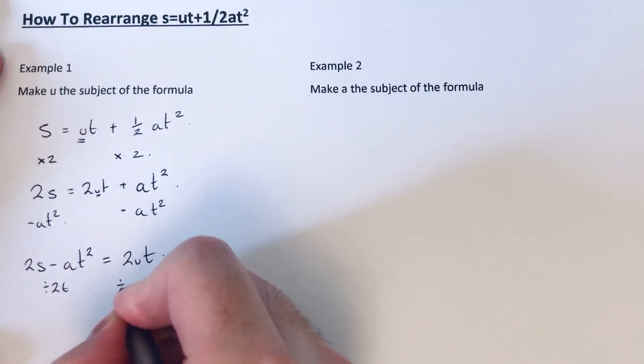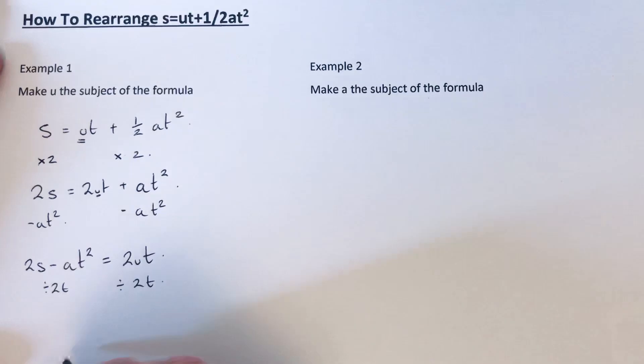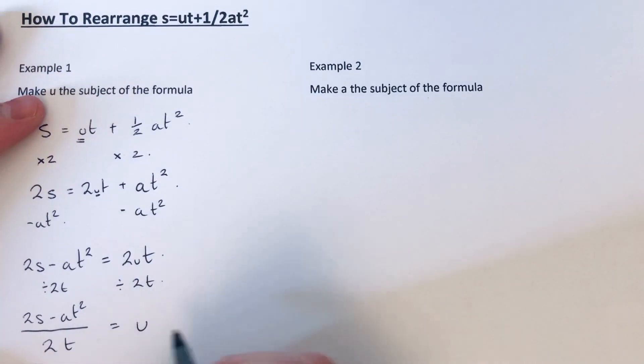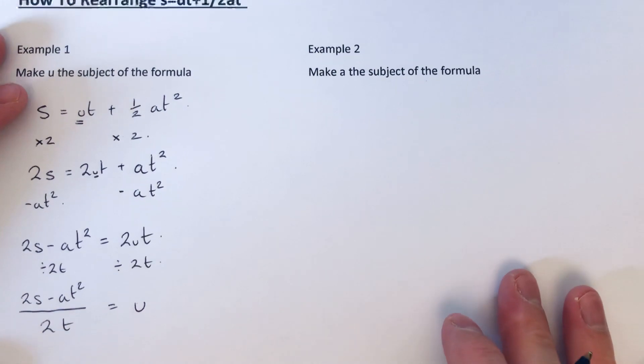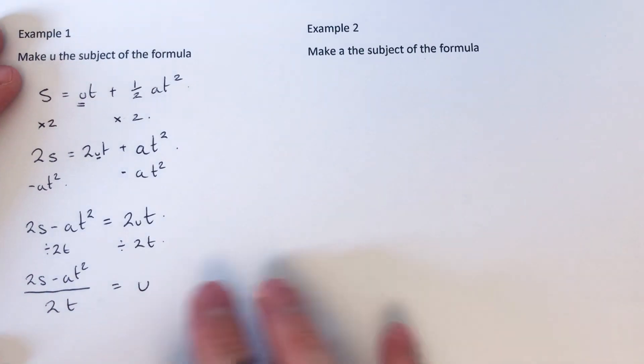So u is being multiplied by 2t, so I'm going to divide both sides by 2t. So that will give me 2s minus at squared divided by 2t equals u.